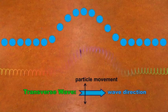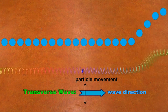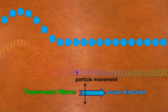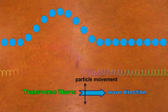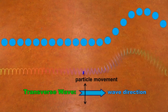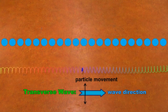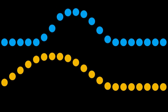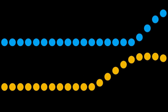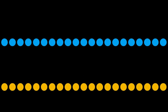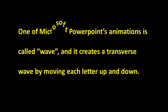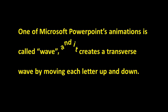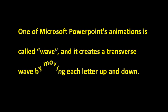Each loop is moving only up and down as the wave moves from left to right. You can see that the blue tape on one of the coils does more or less the same thing. The waves move sideways, but each particle moves only up and down. One of Microsoft PowerPoint's animations is called wave, and it creates a transverse wave by moving each letter up and down.